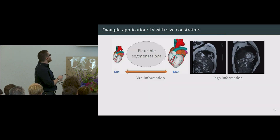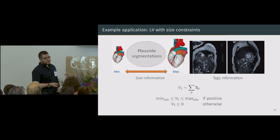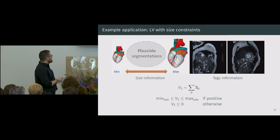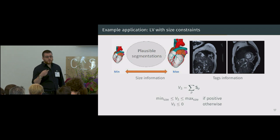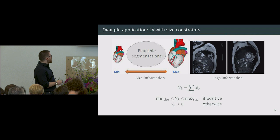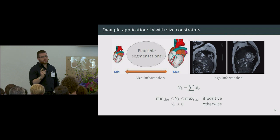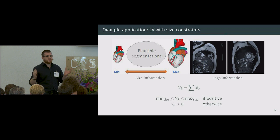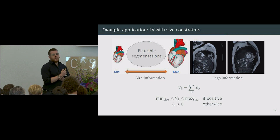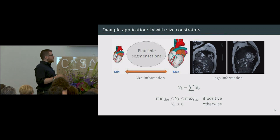On top of that, we have size information about the problem, as well as tags. Some slices don't have any left ventricle, so in that case the size should be zero. Otherwise, we have a minimum and maximum size that we have defined. We computed these values from a single fully segmented patient, but based on our experiments, we don't need to be very precise with the bounds — just having something that makes sense is already doing a good job, and you could even eyeball those values.